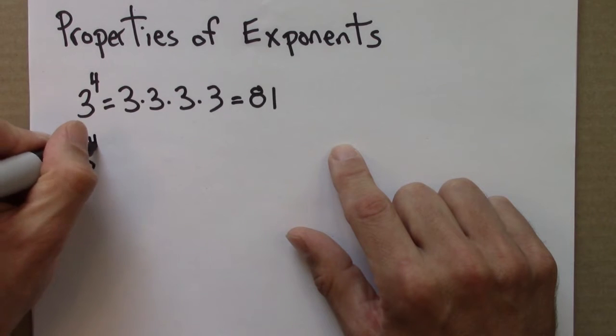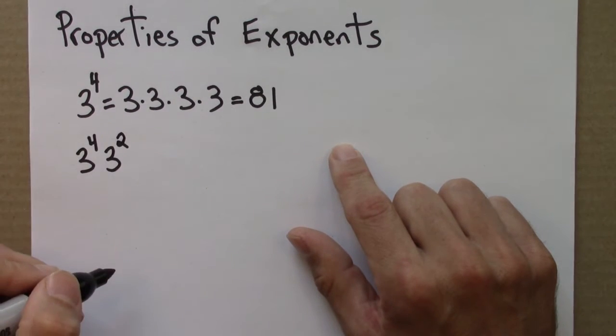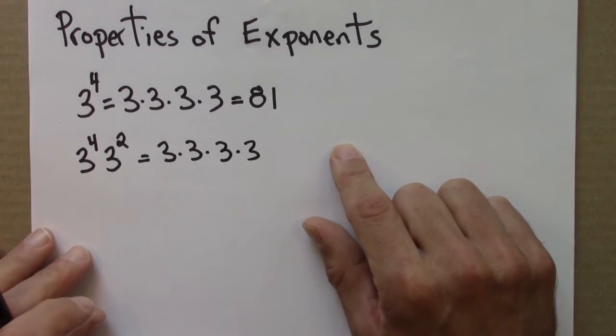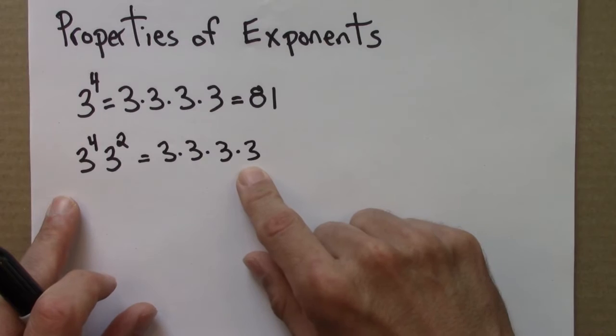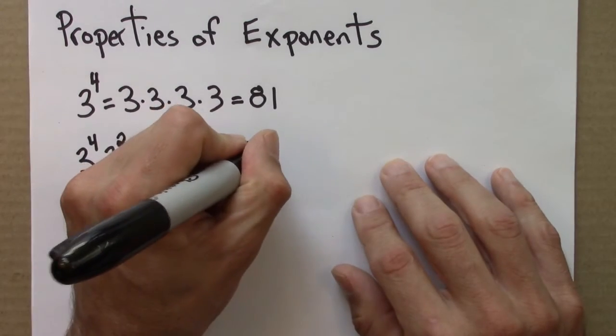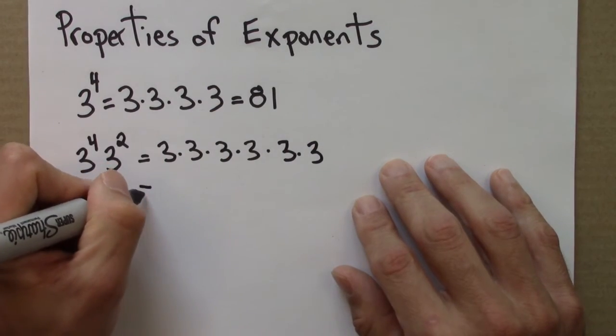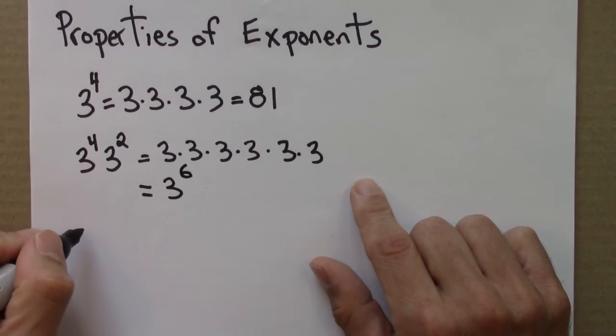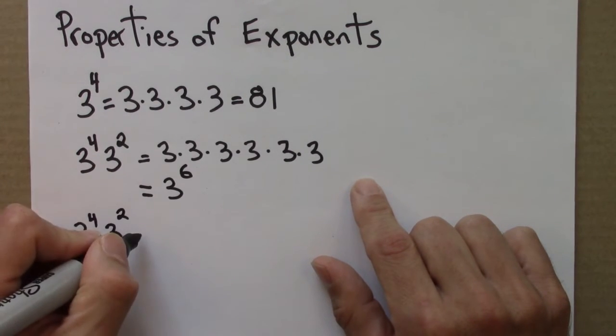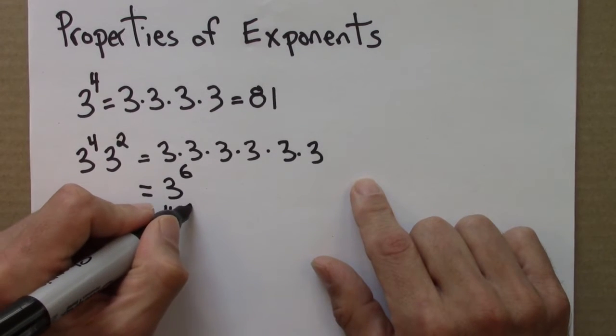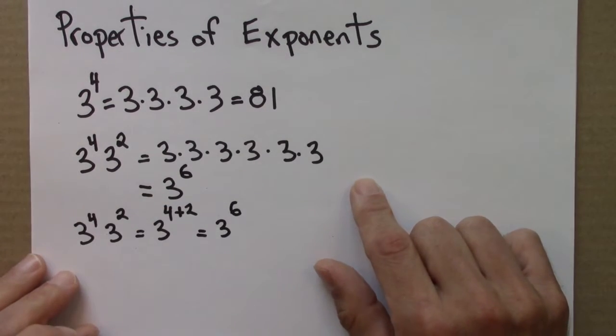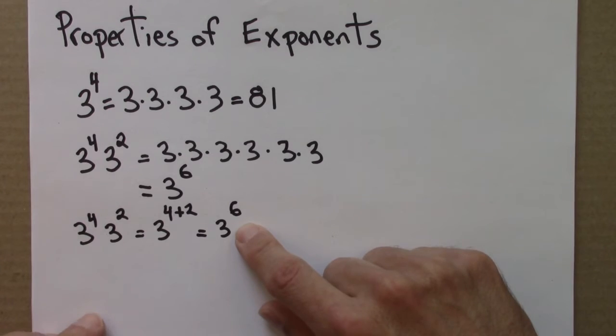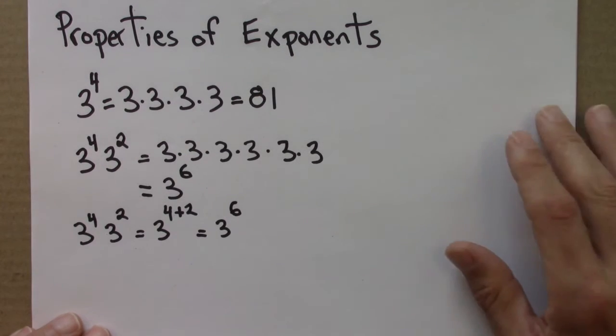So what if we had something like 3 to the 4 times 3 to the 2, 3 squared? Well, 3 to the 4 is 3 times 3 times 3 times 3. 3 squared means multiply by itself 2 times. So we can see, we can just count—1, 2, 3, 4, 5, 6—so this is 3 to the 6. If you multiply 3 by itself 4 times, and then 3 by itself 2 times, and multiply those together, that's the same as multiplying 3 by itself 6 times.